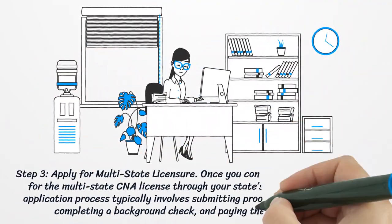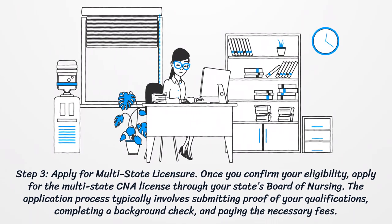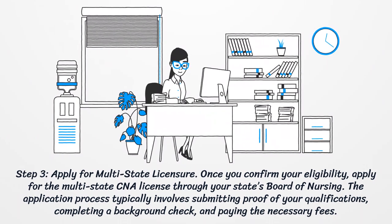Step three: apply for multi-state licensure. Once you confirm your eligibility, apply for the multi-state CNA license through your state's board of nursing. The application process typically involves submitting proof of your qualifications, completing a background check, and paying the necessary fees.